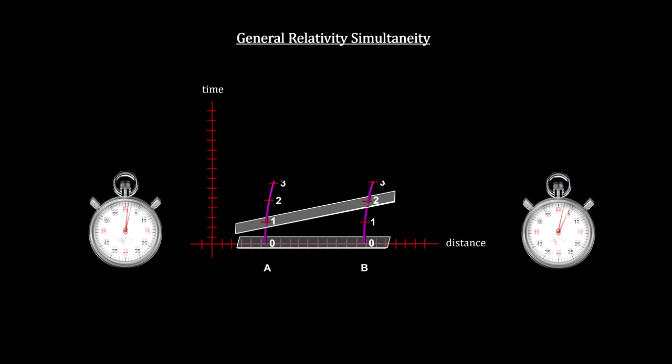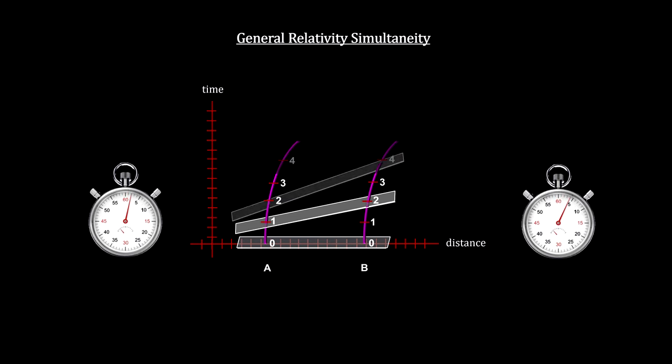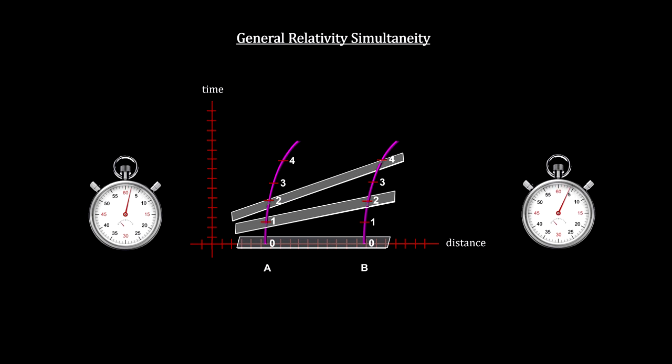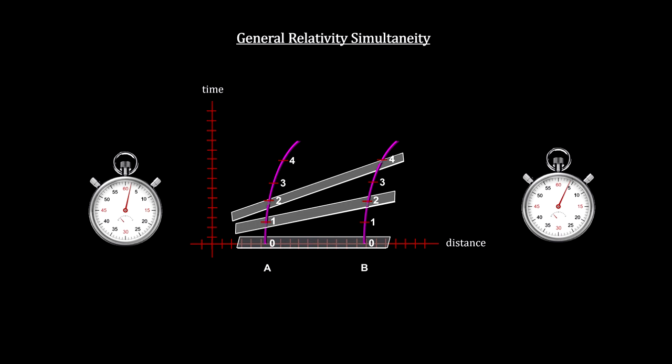Continuing to a higher velocity, with the steeper slope for the simultaneity plane, B sees A's clock reading two when his own clock reads four. A also sees his own clock reading two when B's clock reads four. A and B both agree that A's clock is ticking slower than B's clock.